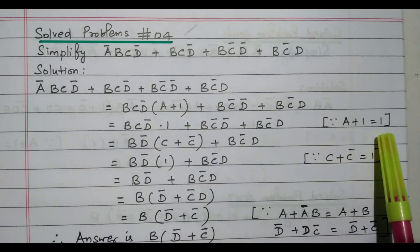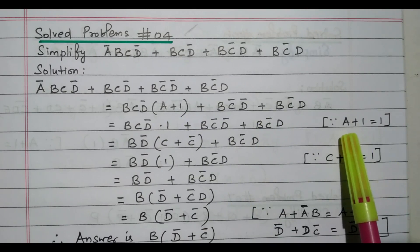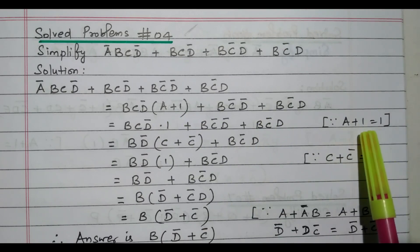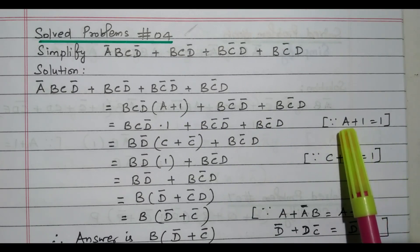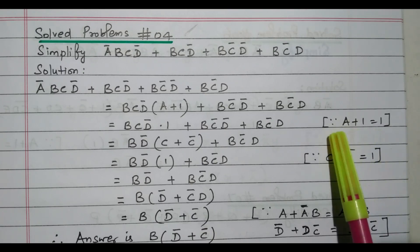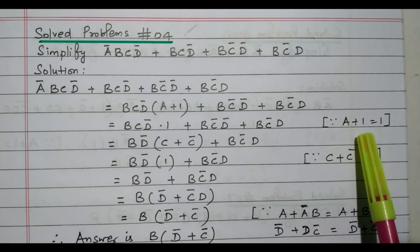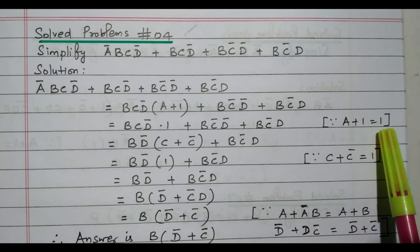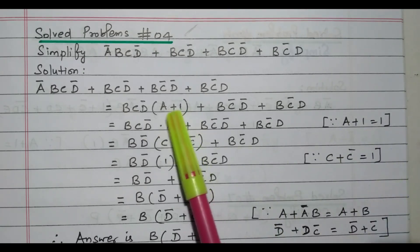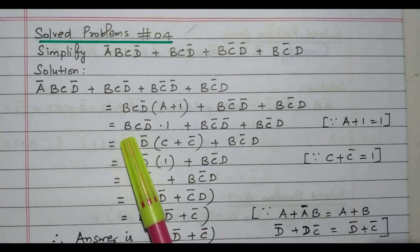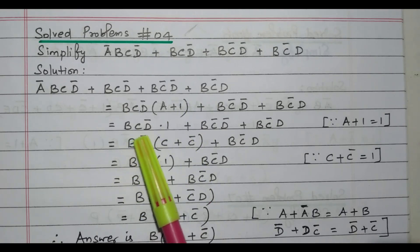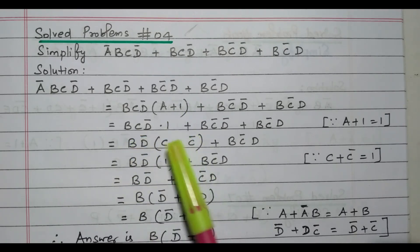What is ā + 1? ā + 1 is nothing but 1. Any variable added with 1 will give 1 only, because whatever value a may be, adding any value with 1 will give 1. So ā + 1 equals 1. This term becomes 1.